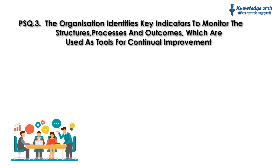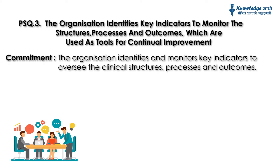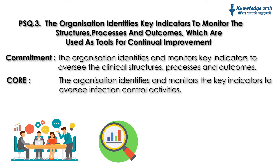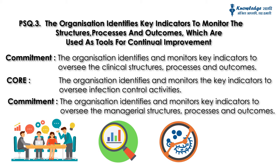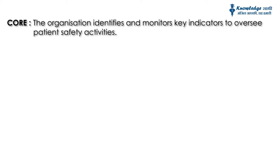Standard 3: The organization identifies key indicators to monitor the structures, processes, and outcomes, which are used as tools for continual improvement. The organization identifies and monitors key indicators to oversee the clinical structures, processes, and outcomes, as well as managerial structures, processes, and outcomes, and patient safety activities.